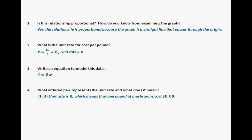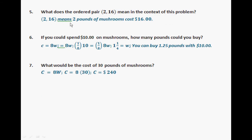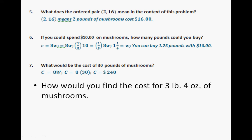Continuing on for 5 through 7, what does the ordered pair mean? If you could spend $10 on mushrooms, using the equation, make sure you show your work and write a concluding statement and then asking what is 30 pounds of mushrooms. Using the equation, showing your work is what will be expected. So how would you find the cost for 3 pounds, 4 ounces of mushrooms? Don't forget to convert 3 pounds, 4 ounces into pounds, knowing that 16 ounces is a pound.